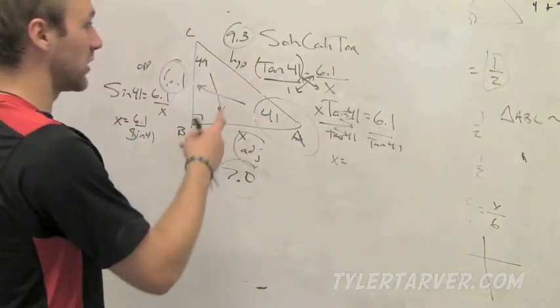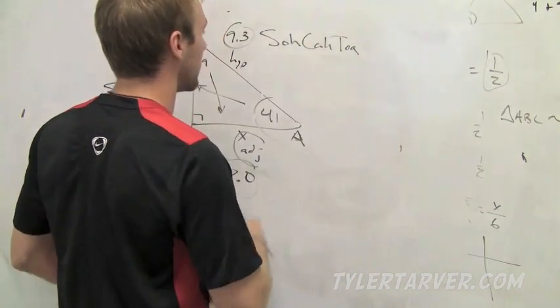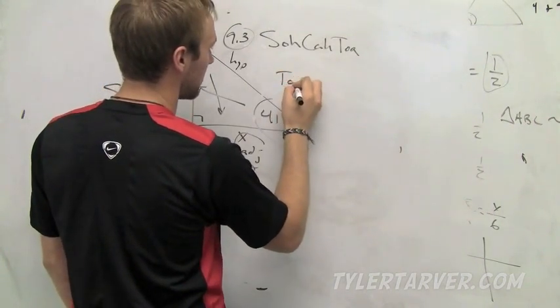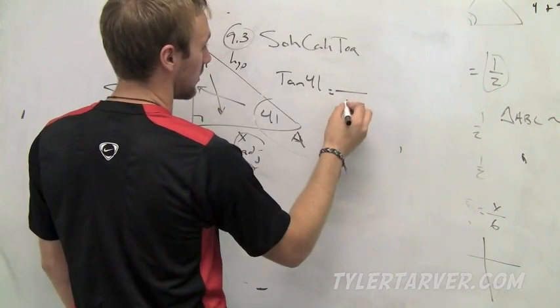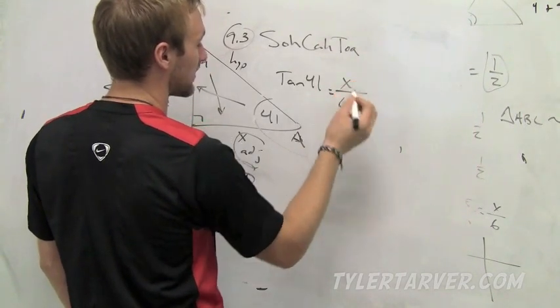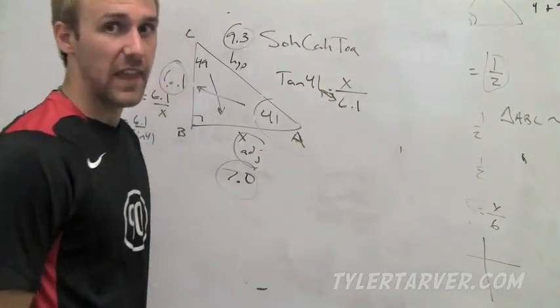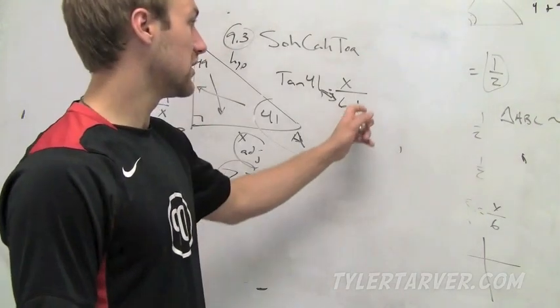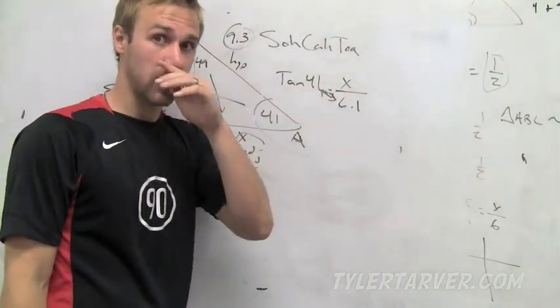You switch it if the variable's on the bottom. Say that it hadn't been, say it had been like the variable on the top, like tangent of 41, I'm just making this up so don't quote me, equals 6.1 over X. Say that was the case. All we have to do is multiply these and that's our answer. One step and we're done after you set it up, if the variable is on the top. Because when you cross multiply, this is just multiply times 1 and you'd be done.